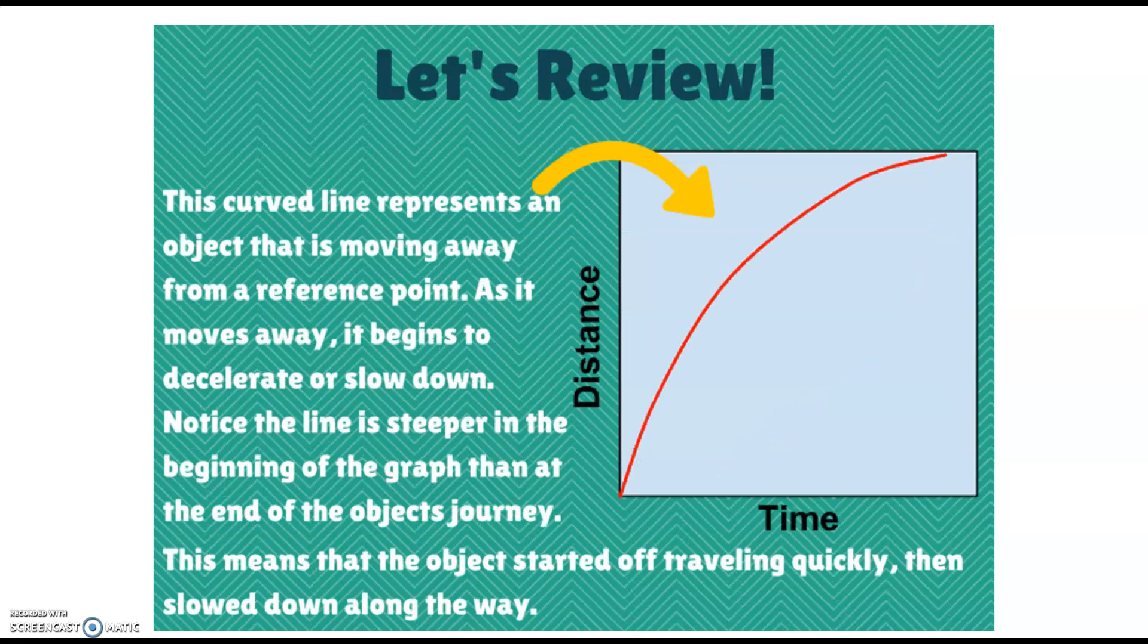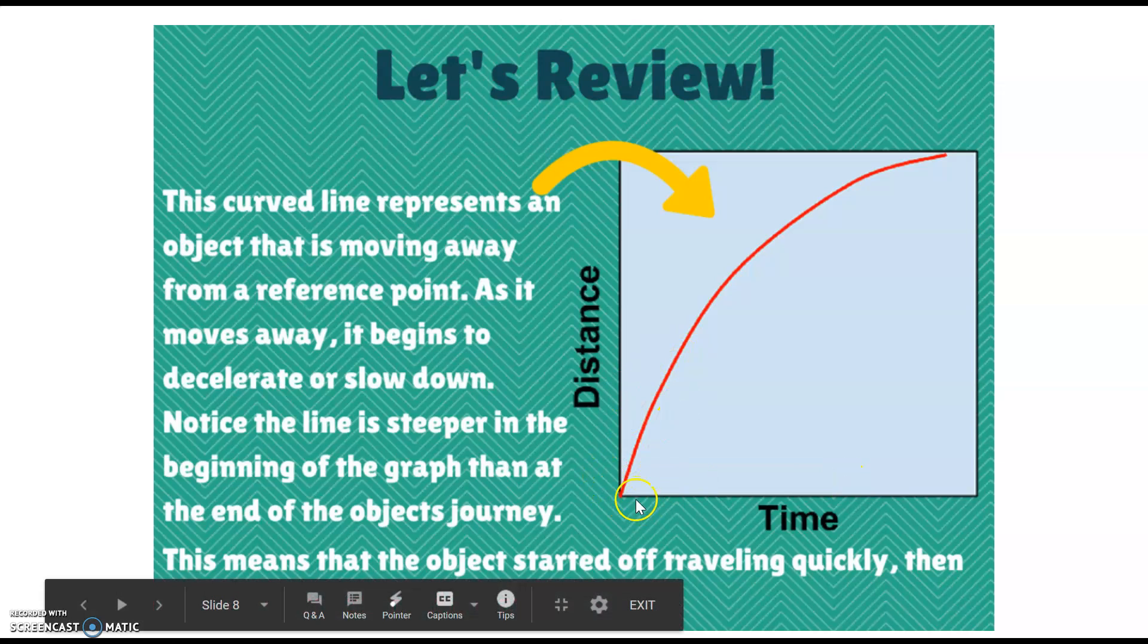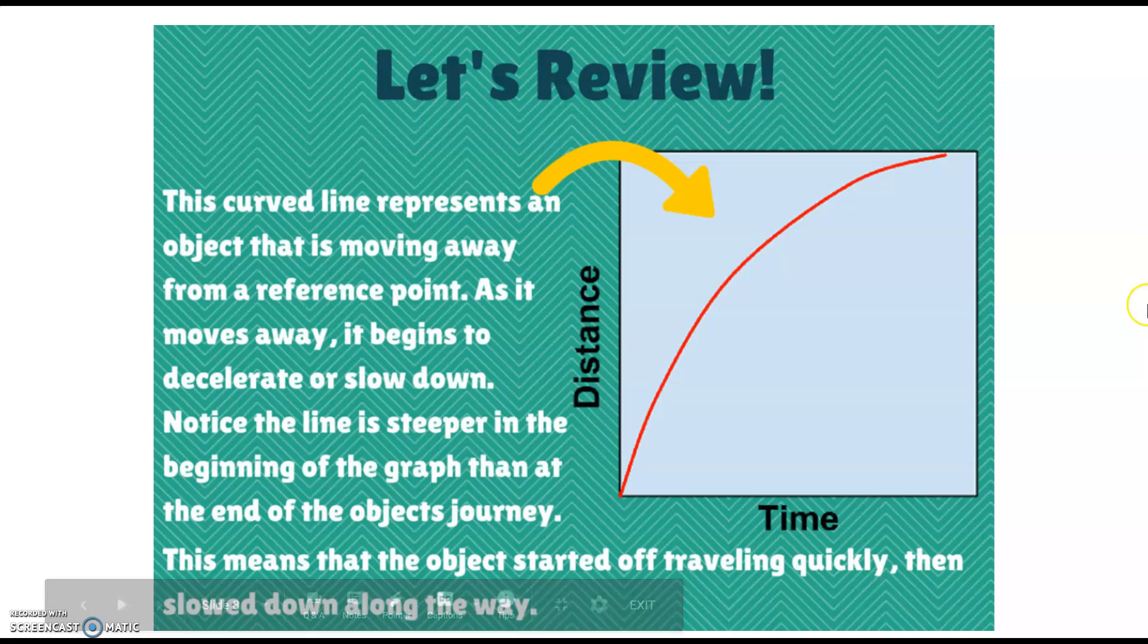This line is also moving away from a reference point but as it moves away instead it begins to slow down. I know this slide says decelerate but remember in physics we would just say that it is accelerating in the negative direction. We can notice that the line is steeper in the beginning of the graph and more shallow at the end. So this means that the object started off traveling quickly and then slowed down along the way.